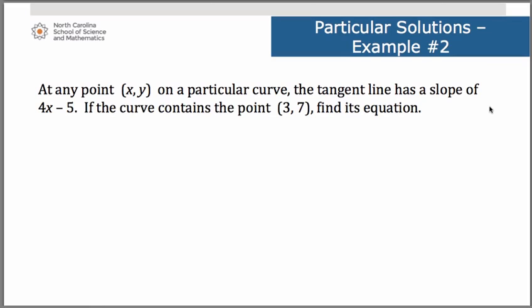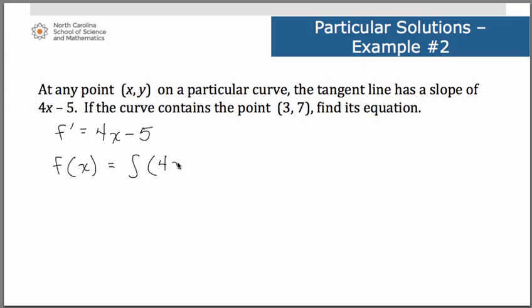In this next problem, at any point (x, y) on a particular curve, the tangent line has a slope of 4x − 5. If the curve needs to contain the point (3, 7), find its equation. This is a great problem because of how it's worded. Notice you are told the tangent line has a slope of 4x − 5 — that's your derivative. By definition, the derivative is the slope of a line tangent to a curve. You're being given what the derivative is, so if I want to find the original curve, my original function f(x) is found by taking the antiderivative of that derivative. Notice the correct and proper mathematical notation for setting up a problem such as this.